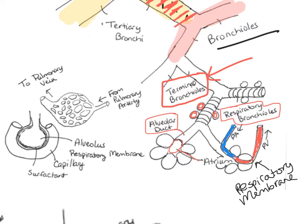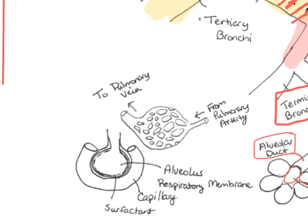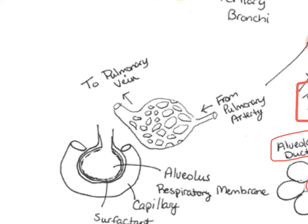This picture shows one alveolus. Blood coming from the pulmonary artery is blue, and you can see the capillaries branch off into a capillary network surrounding that alveolus. The blood picks up oxygen from the alveolus and then returns to the left side of the heart through the pulmonary vein, going to the left atrium.